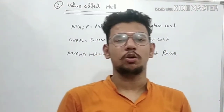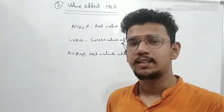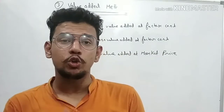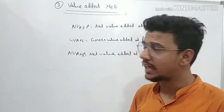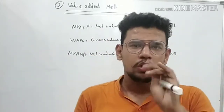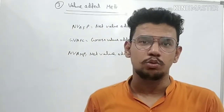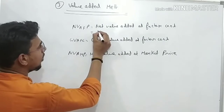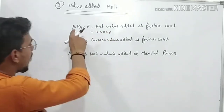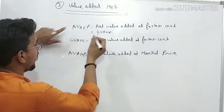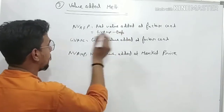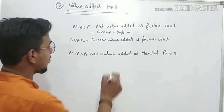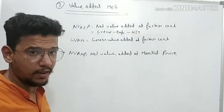Moving forward, once you calculate GVMP — Gross Value Added at Market Price — the exam may also ask for NVAFC (Net Value Added at Factor Cost). Don't be confused; it is nothing different. You've already found GVMP. To get NVMP (Net Value Added at Market Price), take Gross minus Depreciation. To get to Factor Cost, subtract NIT (Net Indirect Taxes).